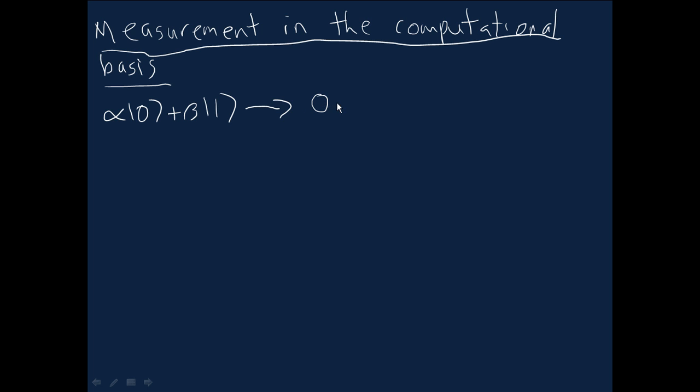So in particular, it gives you a classical bit zero with probability alpha squared.